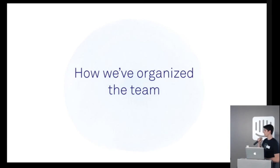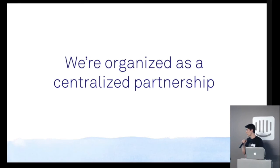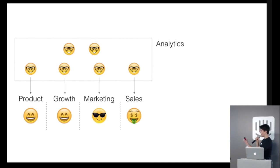How have we organized the team? We organize ourselves as what I call a centralized partnership. And a centralized partnership looks like this: analytics all sits together, we report up to the same organization, we work together. But we have analysts that partner with each of the functions of the organization. So analysts that partner with product, analysts that partner with growth, marketing, and with sales.